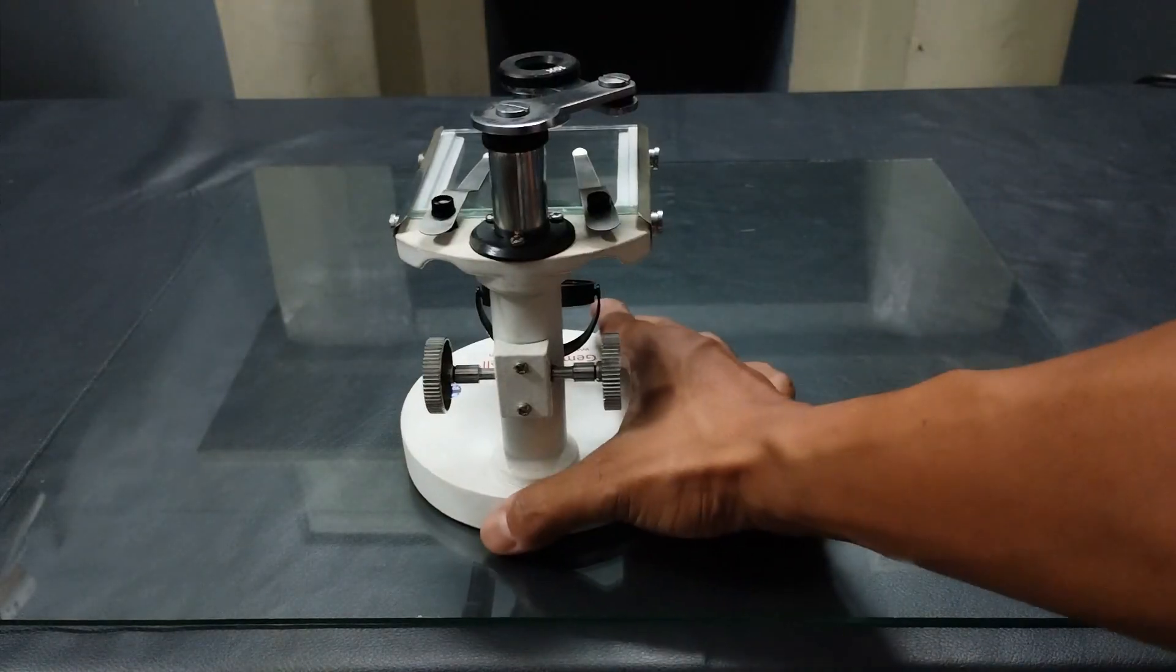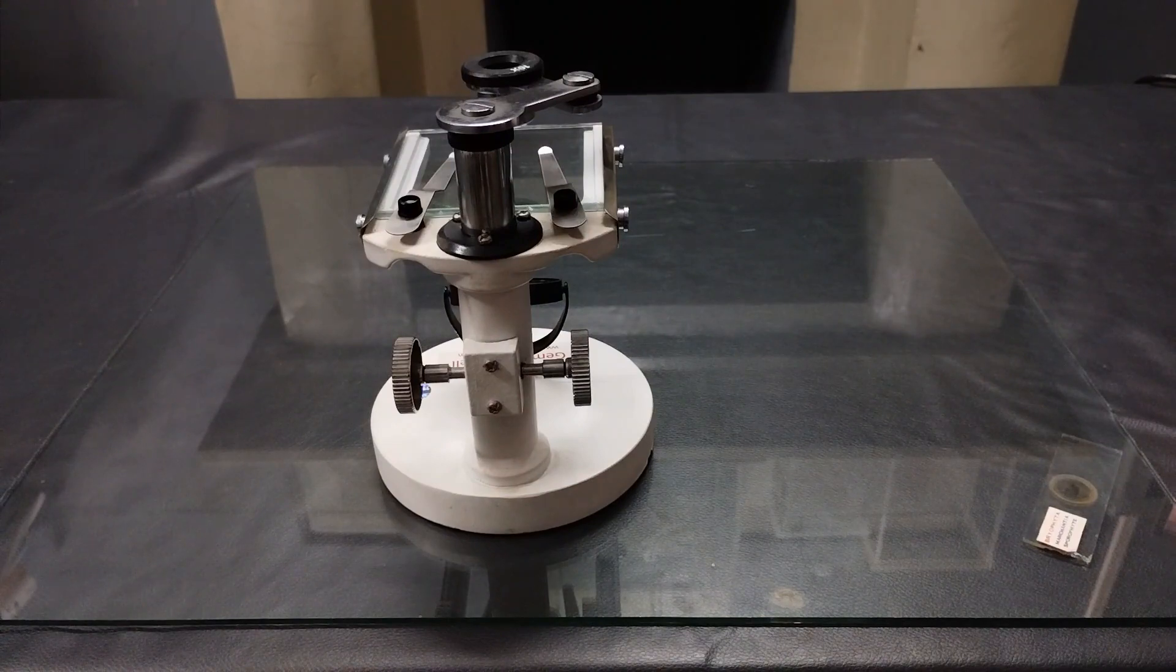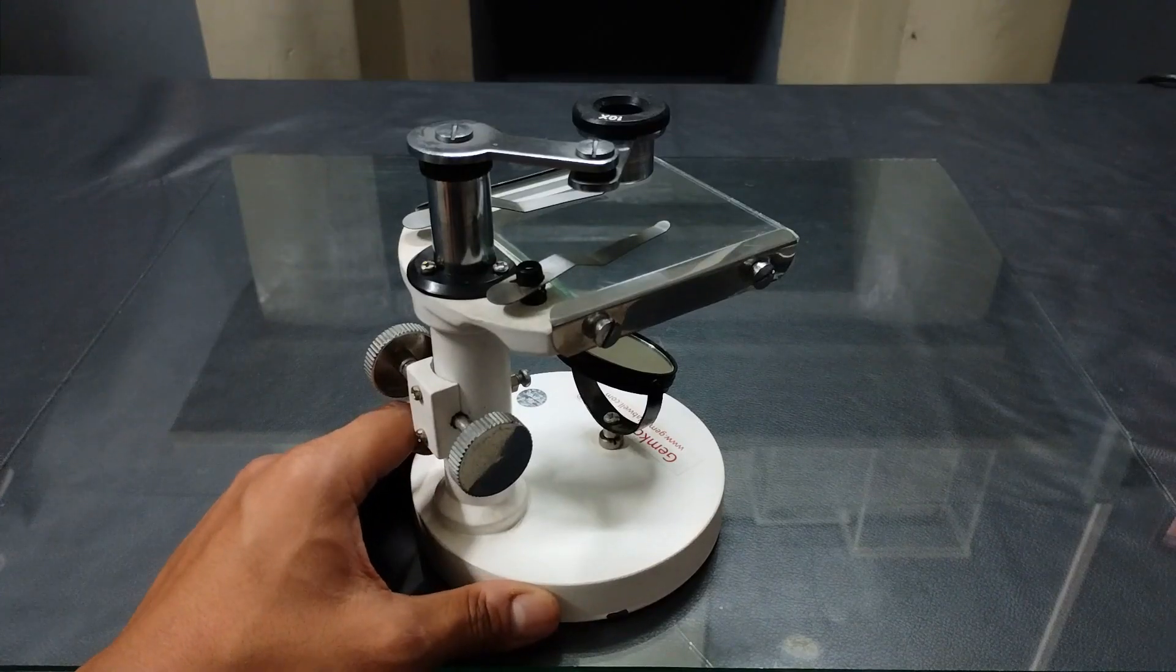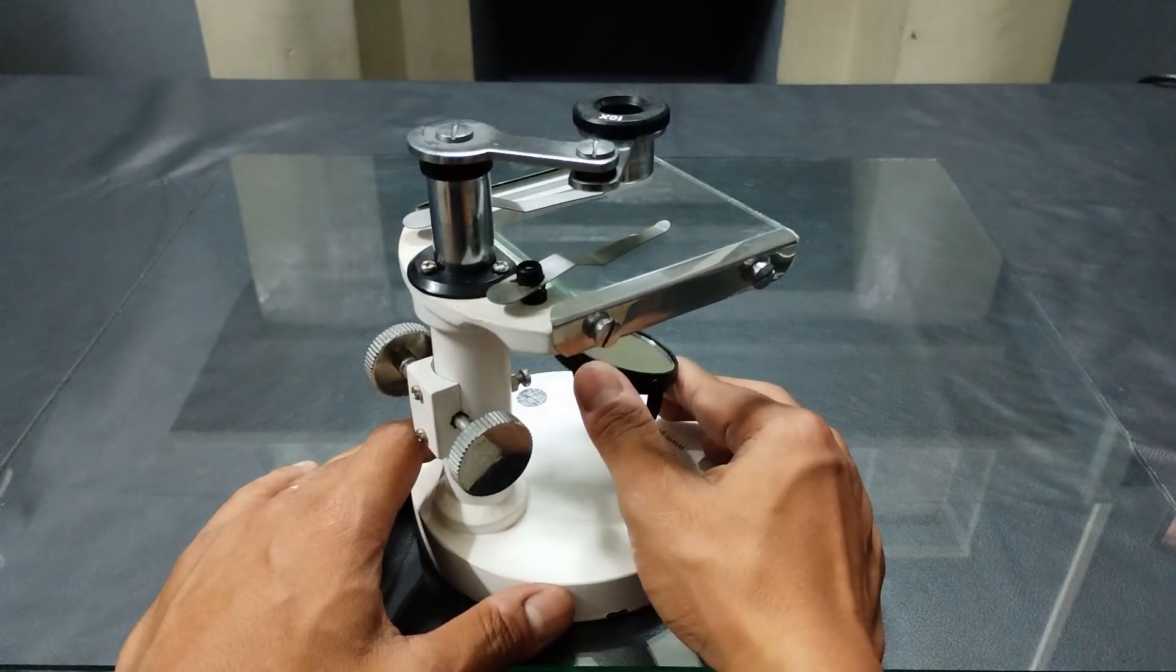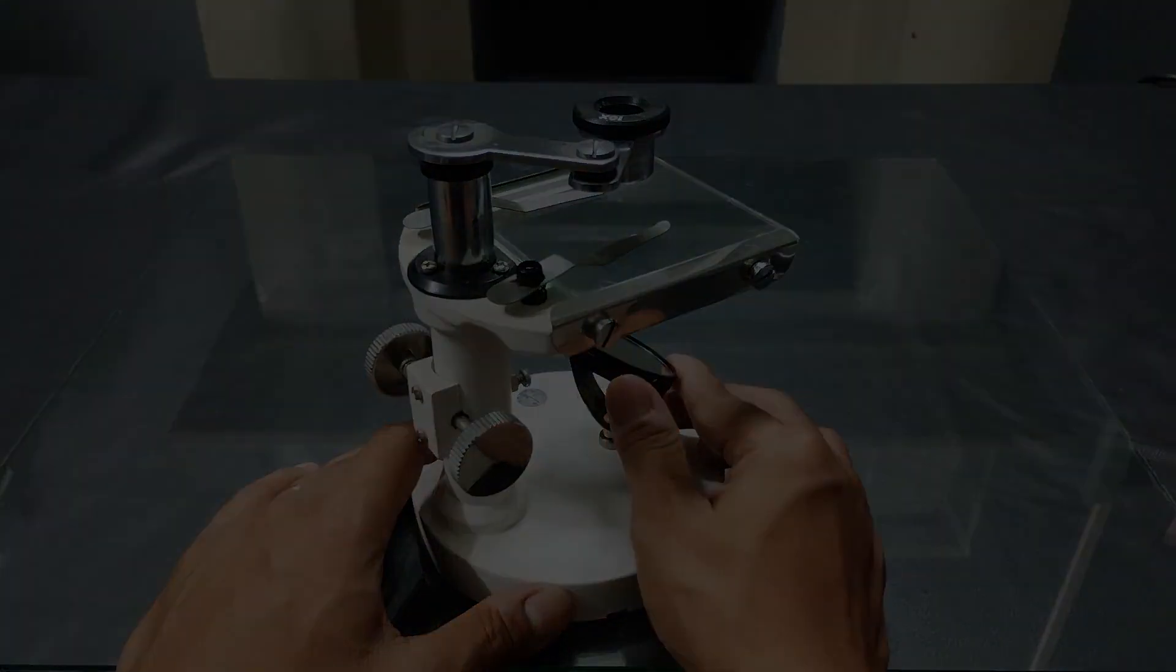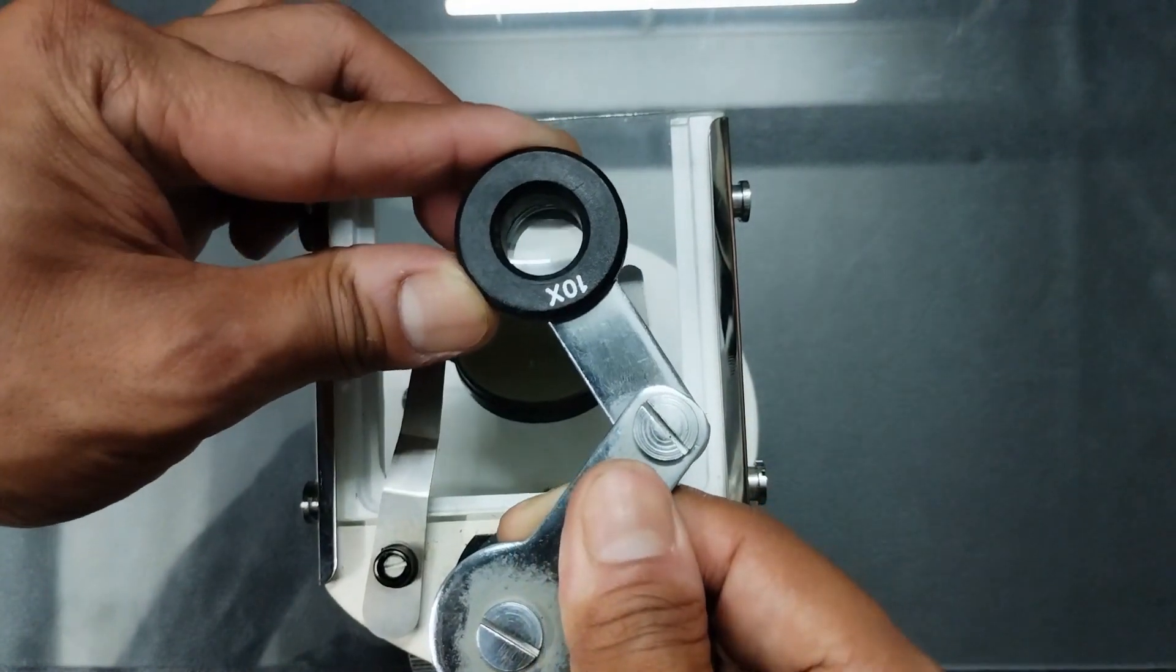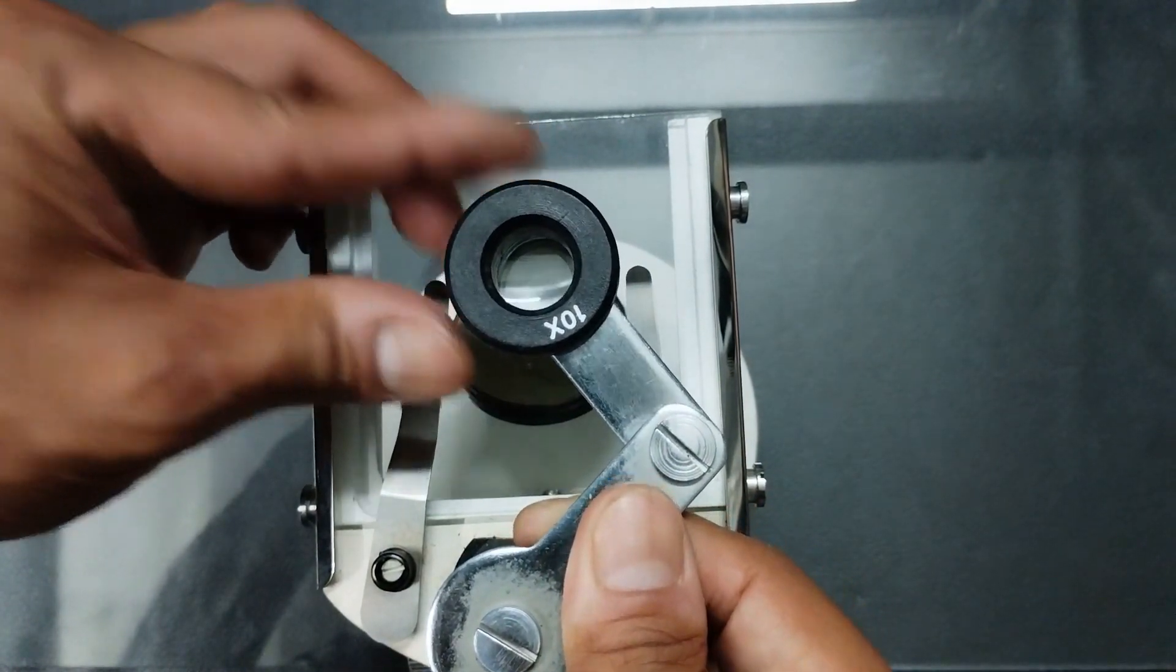To use this microscope, first position it on the working table at a safe distance from the edge. Make sure that the mirror is able to receive bright or diffuse, but not direct light, either natural or artificial. Adjust the foldable arm such that the eyepiece lens is in line with the mirror below and roughly with the center of the glass stage.